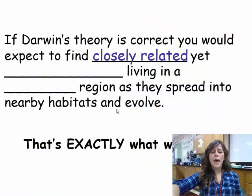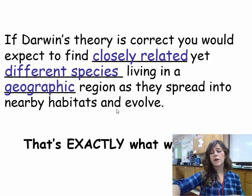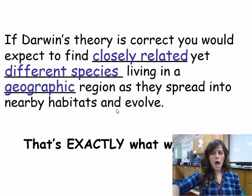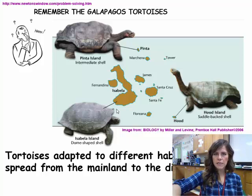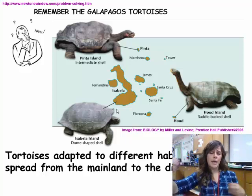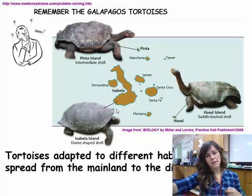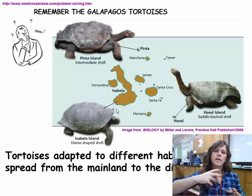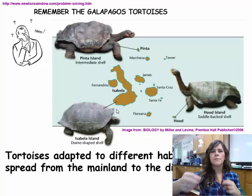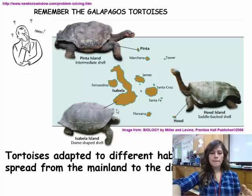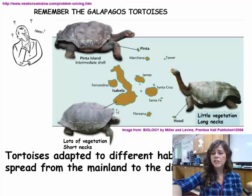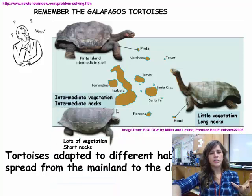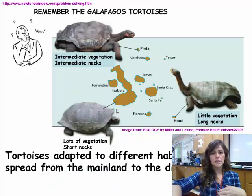Geographic distribution: if Darwin's theory is correct, you would expect to find closely related yet different species living in a geographic region as they spread into nearby habitats and evolved - and that's exactly what we see. Remember the tortoises? They adapted to different habitats as they spread from the mainland to different islands. Darwin also studied finch beaks and found that beak sizes were dependent on the type of food available on each island. Lots of vegetation led to short necks in tortoises; little vegetation led to long necks to reach that vegetation.